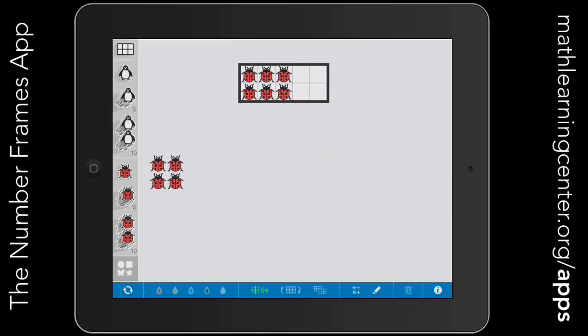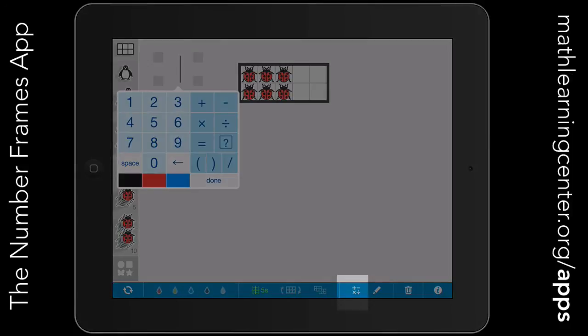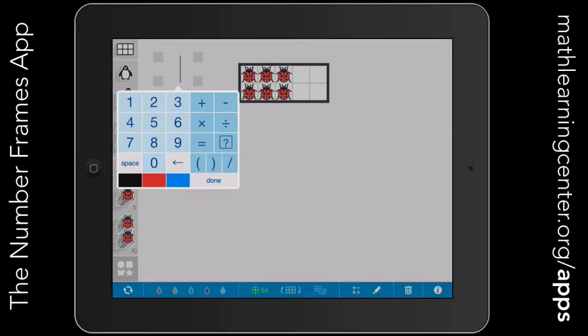You can write equations with the number frames app by choosing this calculator button down here at the bottom. For this ten frame our equation might look something like 6 + ? = 10. You can choose which color you'd like your equation to be.